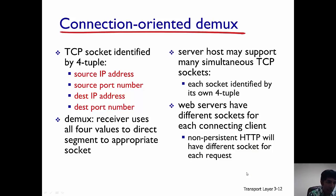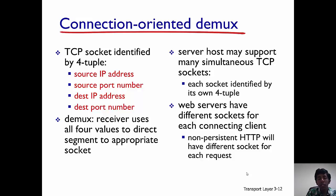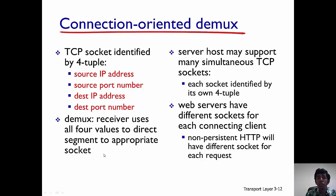Now we look at connection-oriented demultiplexing. An example of a connection-oriented protocol is TCP. Recall that in UDP we only use the destination port for demultiplexing. In TCP, however, we use a four-tuple: the source IP address, source port, destination IP address, and destination port. The receiver uses all four values to direct the segment to the appropriate socket. Also note that a server host may support multiple simultaneous TCP connections, and each TCP socket is identified by its own four-tuple.